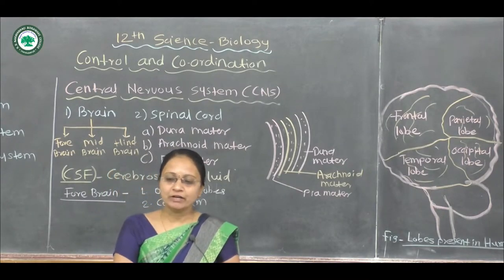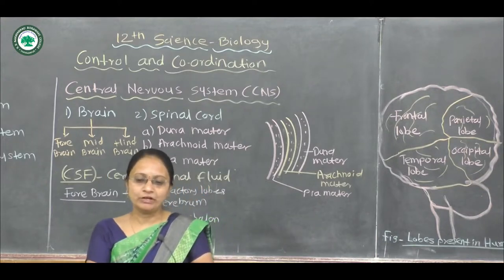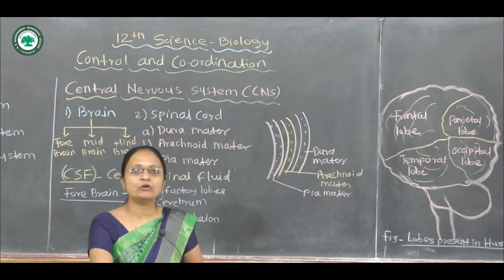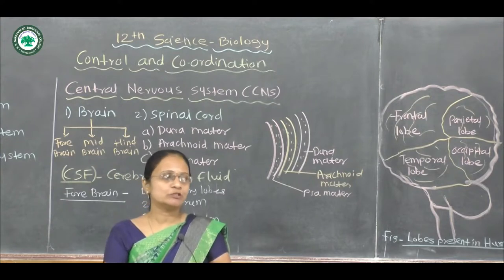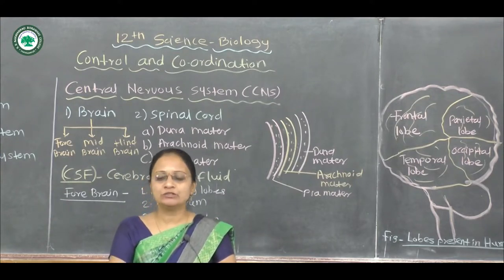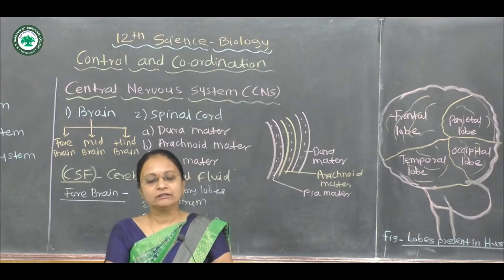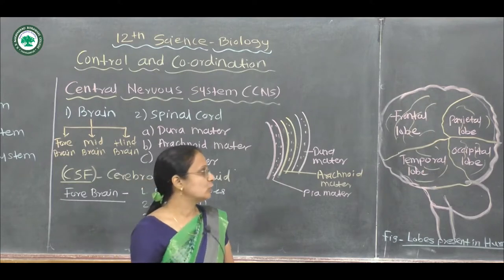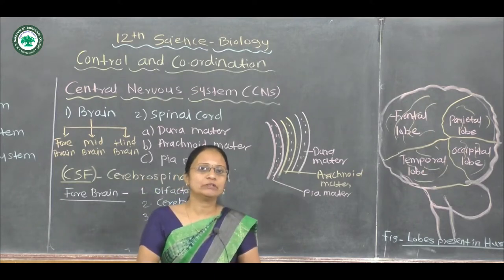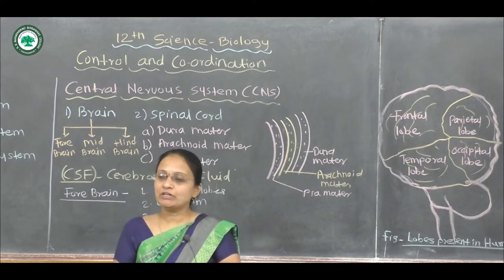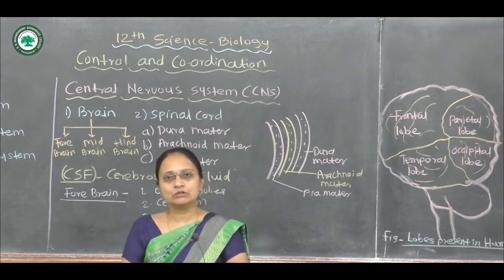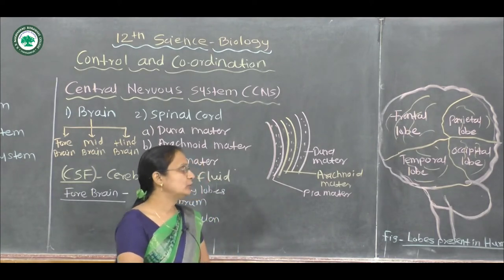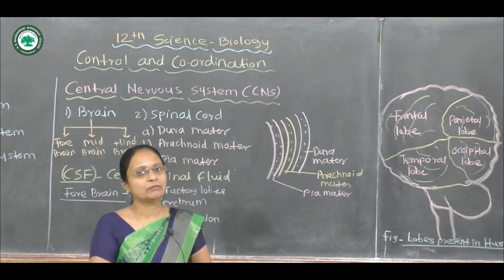The parietal lobe is responsible for the sensations of pain, pressure, temperature, and taste. The temporal lobe is responsible for the sensation of smell, hearing, speech, and emotions. The occipital lobe has a connection with vision and image identification.